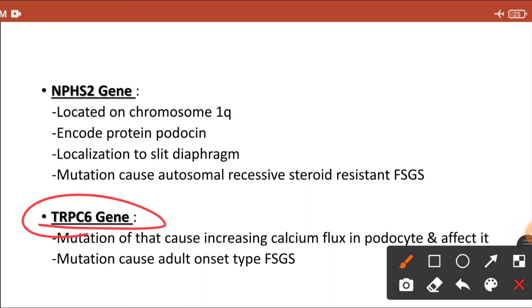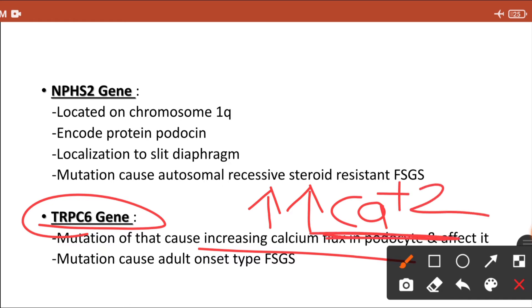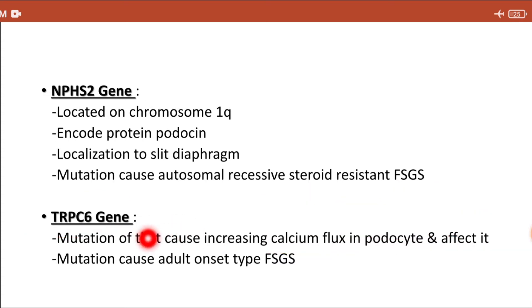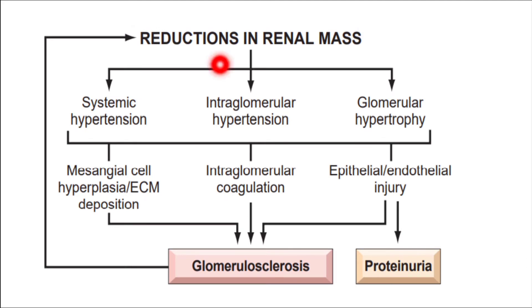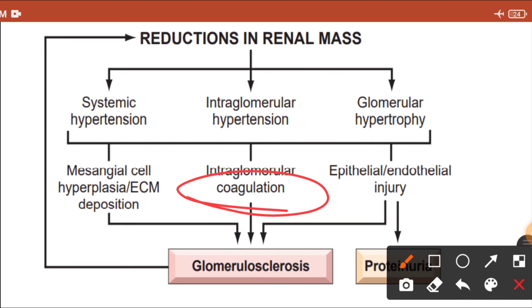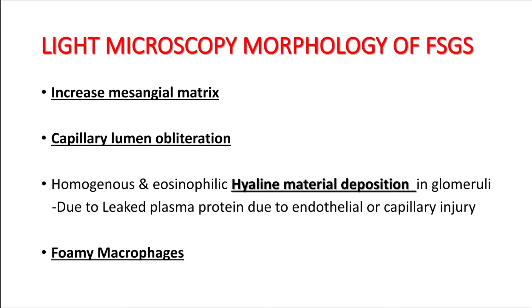The fourth genetic cause is mutation of the TRPC6 gene. Mutation of this gene increases calcium influx into the podocyte, and excessive calcium can lead to irreversible cell injury. Its mutation causes adult-onset FSGS. When there is a reduction in renal mass, there is sclerosis of the glomerulus, intraglomerular hypertension, and damage to capillaries which activates the coagulation system, leading to endothelial injury and proteinuria.